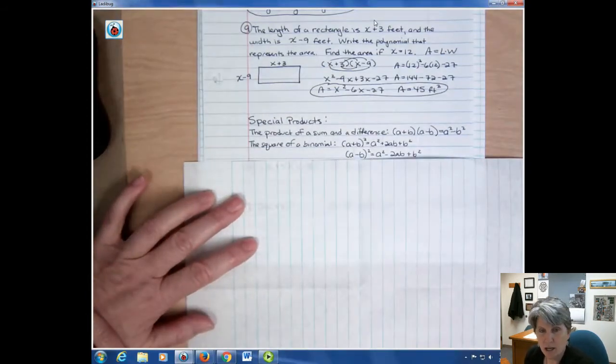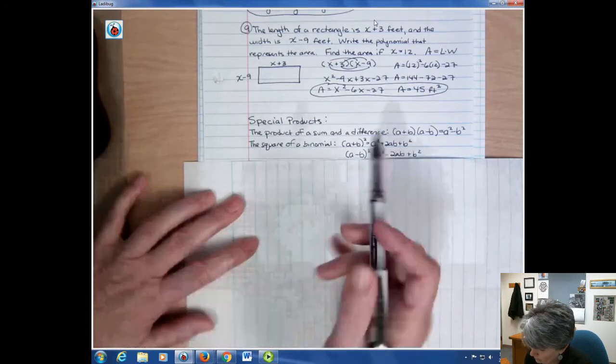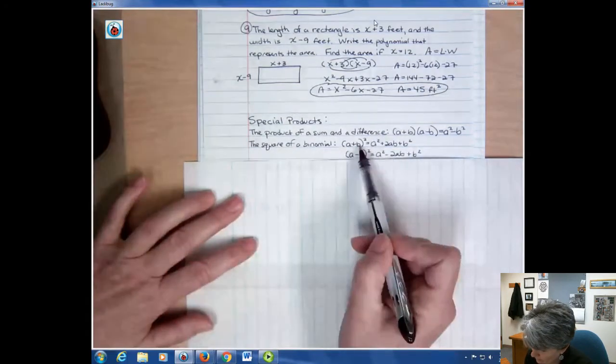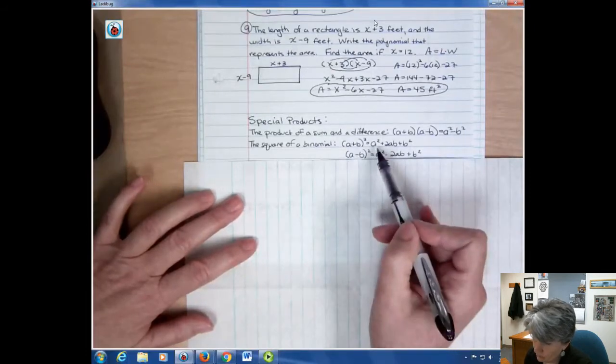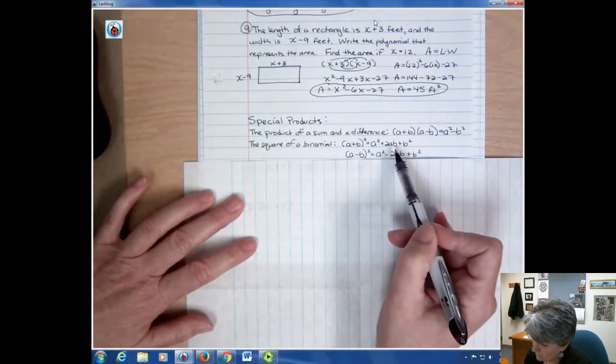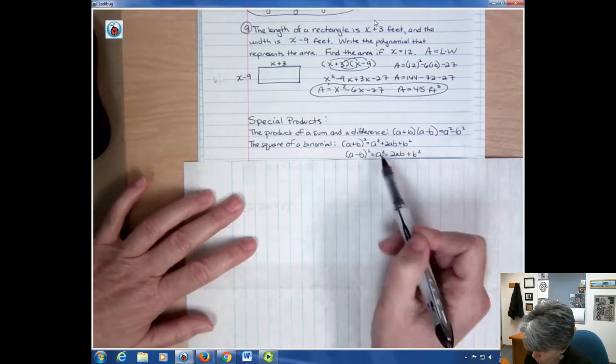Another special product is the square of a binomial. That is, if you have the same thing twice. It could be that you have a plus or a minus. And these are the little formulas to finish that. And we'll use those. And as we use them, I'll explain them more.